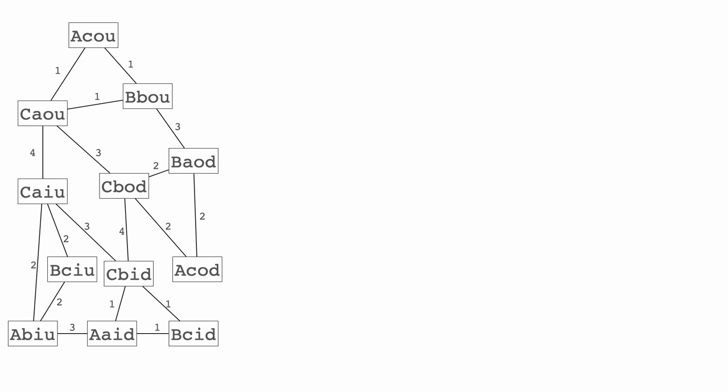The fifth move should be possible somewhere on this graph. So we are going to search for it here. What we need to do is visit every possible position and go through every possible edge, because on each edge we have those intermediate positions — and just search for a fifth move.